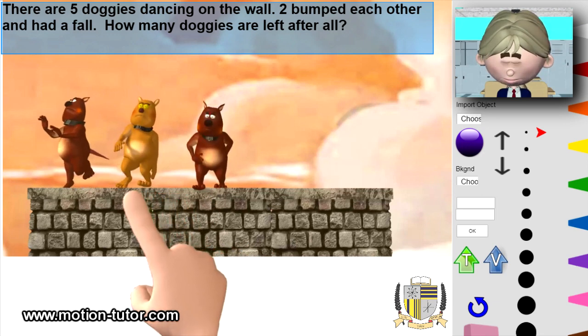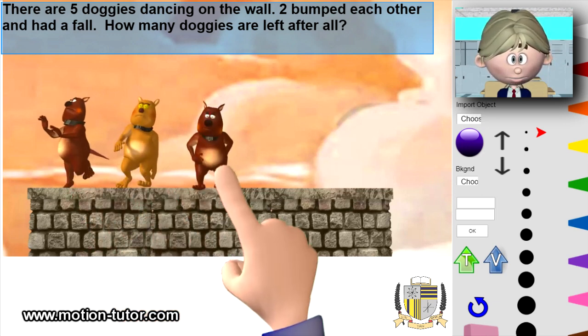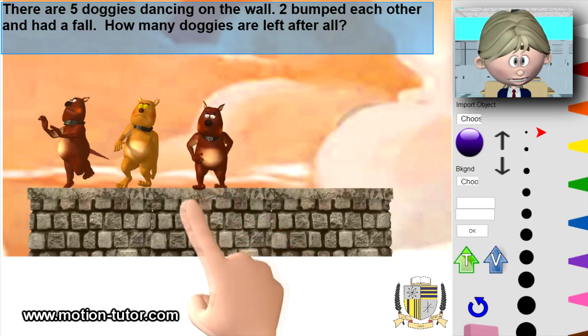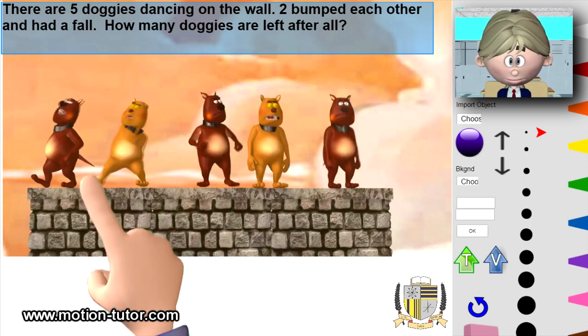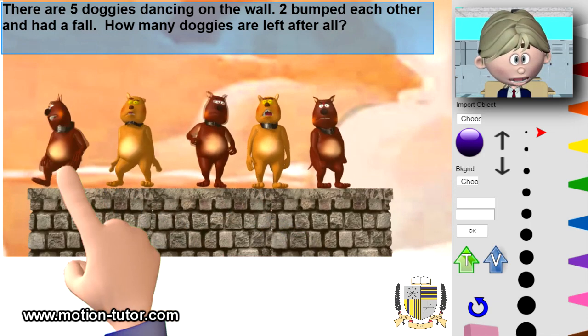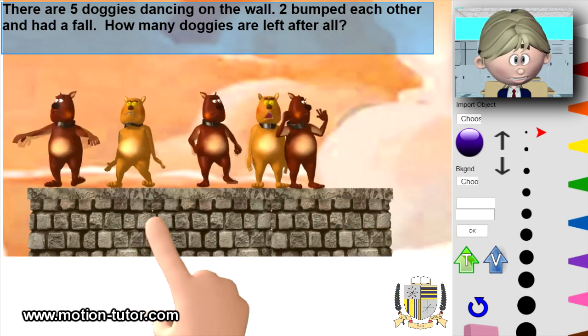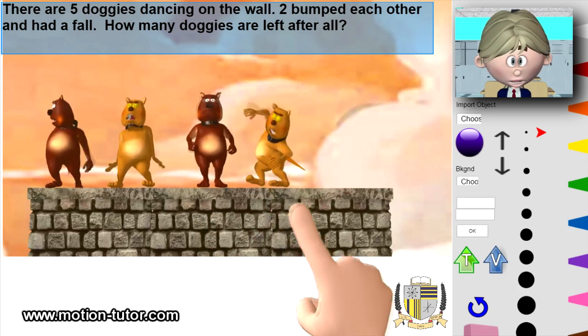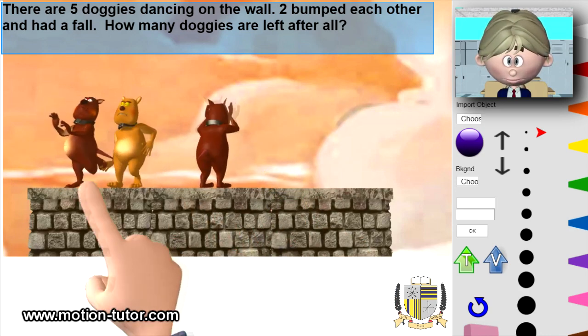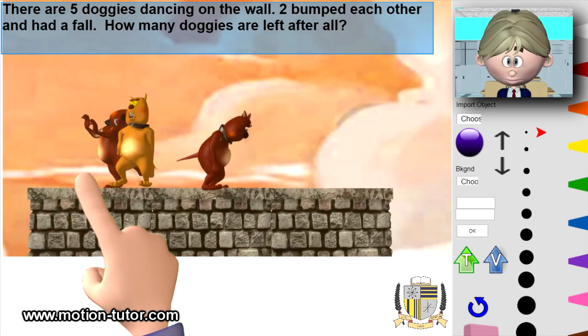Hmm, I see one, two, three. Let's take a quick look at that again. Here are doggies - one, two, three, four, five. And two bumped each other, one, two.